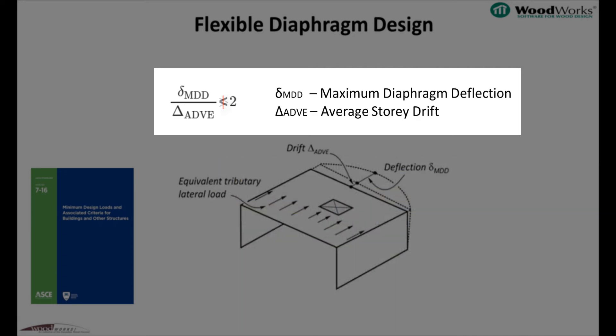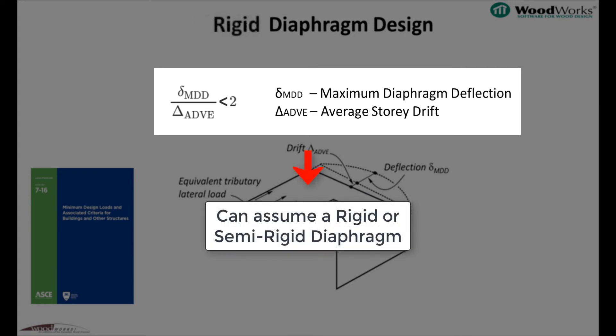So if the maximum diaphragm deflection is less than two times the average storey drift, it can be idealized as rigid or semi-rigid.